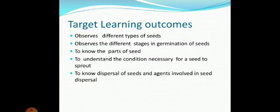Target learning outcomes are: observes different types of seeds, observes the different stages in germination of seeds, to know the parts of seed, to understand the condition necessary for a seed to sprout or to germinate, to know dispersal of seeds and agents involved in seed dispersal.